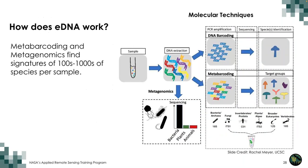At a high level, eDNA uses metabarcoding and metagenomics to identify hundreds to thousands of species per sample. After DNA extraction, key segments are matched against a metabarcoding reference library to find target groups and map species. Metagenomics can also bin organisms into broad functional categories.